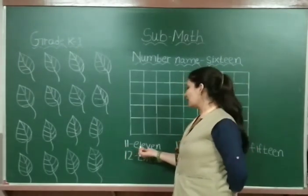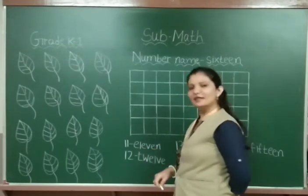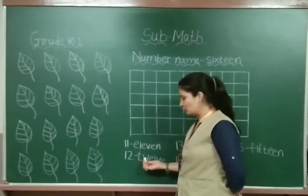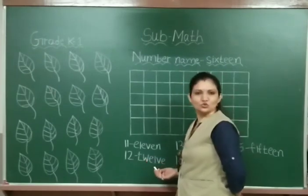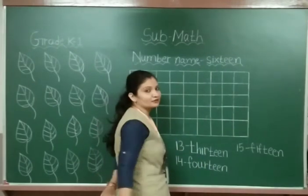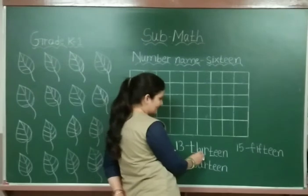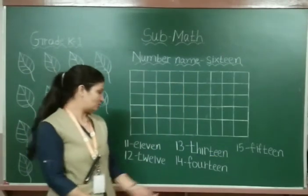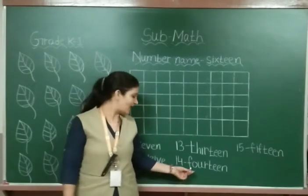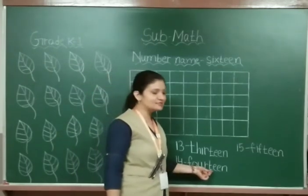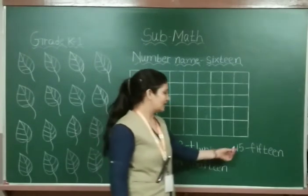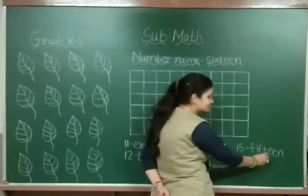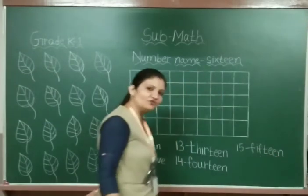And what is the spelling of 11? E-L-E-V-E-N, 11. And 1, 2, 12. What is the spelling of 12? T-W-E-L-V-E, 12. What is the spelling of 13? T-H-I-R-T-E-E-N, 13. And 1, 4, 14. What is the spelling of 14? F-O-U-R-T-E-E-N, 14. And 1, 5, 15. What is the spelling of 15? F-I-F-T-E-E-N, 15. Now after 15?